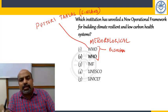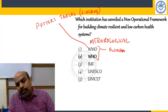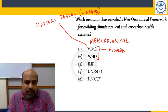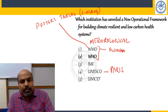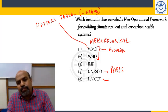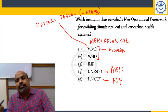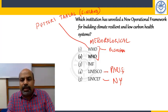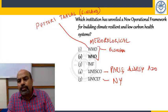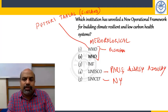UNESCO — the United Nations Educational, Scientific and Cultural Organization — is headquartered in Paris and headed by Dr. Audrey Azoulay. UNICEF, the United Nations Children's Fund, is headquartered in New York and run by Catherine Russell.